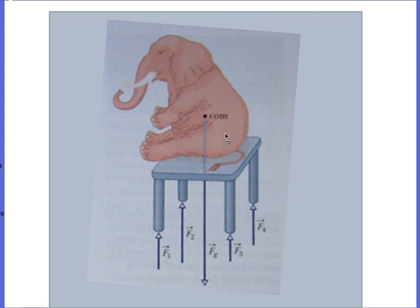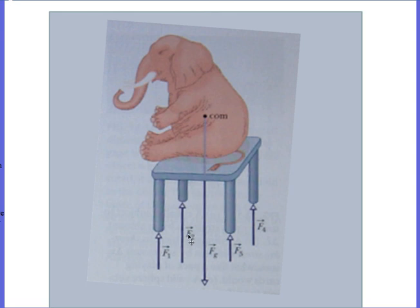This last problem is impossible without additional information. If you know the weight of the elephant and want to find the four leg forces, you have only two equations — translational equilibrium (the four forces sum to the elephant's weight) and rotational equilibrium — to solve for four unknowns. This is called an indeterminate structure. You would need to be given two of the forces, or told that all four are equal, or some other constraint; otherwise the problem cannot be solved.